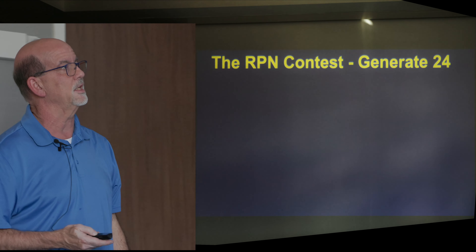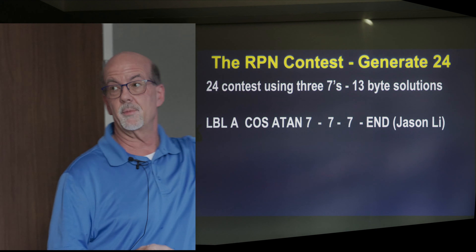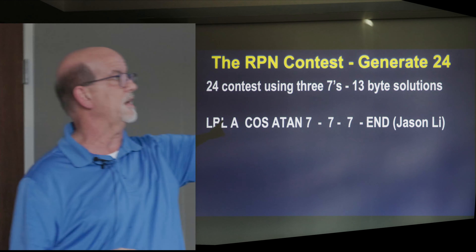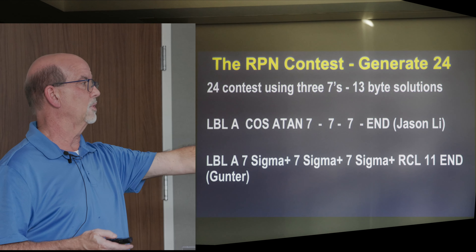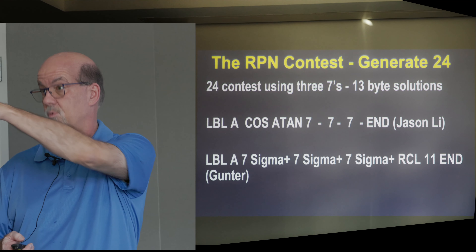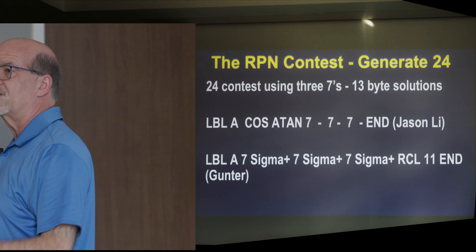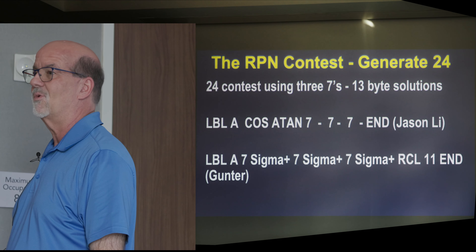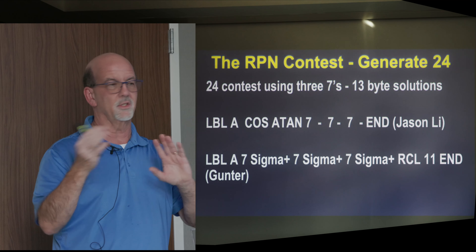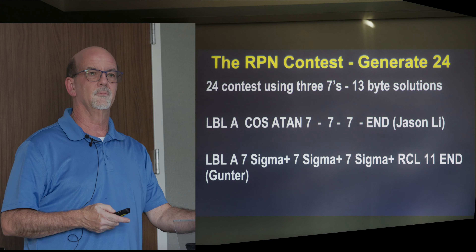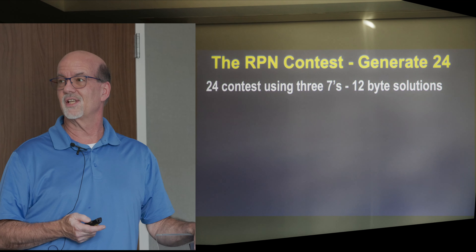Those were the 13s. A couple more 13s — these are ones that were entered. Jason Lee, good job: cosine — remember it's from a master clear so it's going to have zero and it's got to be in degree mode — cosine, arctangent, 7 minus, 7 minus, 7 minus, end. Try it — you get 24, wild stuff. This one is from Gunther using Sigma plus again: 7 Sigma plus, 7 Sigma plus, 7 Sigma plus, recall 11 — because recall 11 has the stored x and y's in there, it's 24. Because it had 0 and 7, it worked: 3 and 21.